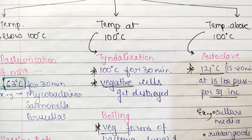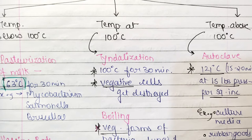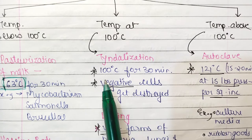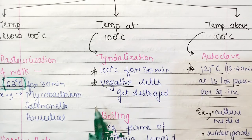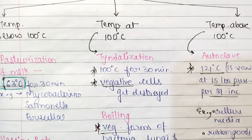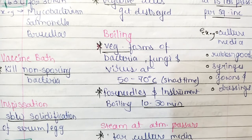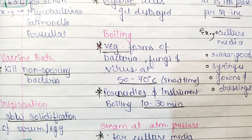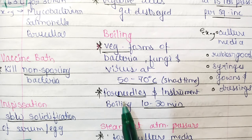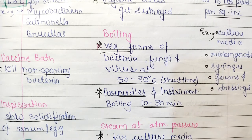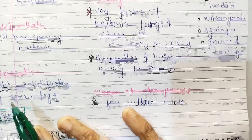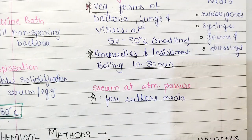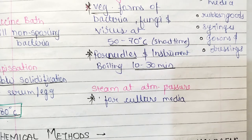At exactly 100 degrees Celsius, tyndallization occurs - at 100°C for 30 minutes, vegetative spores are destroyed. Boiling at 100°C destroys vegetative forms of bacteria, fungi, and viruses from 50 to 70 degrees. Needles and instruments should be boiled for 10 to 30 minutes. Steam at atmospheric pressure can destroy culture media.